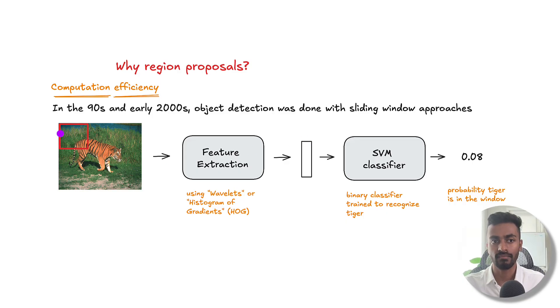Then we pass this into a trained SVM classifier. This is going to be a binary classifier. In this case, let's say it just tries to recognize a tiger. And it'll output some probability number. So probability in this case would be that this window contains a tiger.